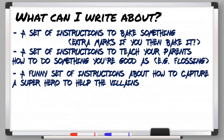Here are some writing ideas for you. First, teach someone how to make your favourite cake or biscuits — you'll get extra marks if you then actually bake it afterwards! Second, write a set of instructions to teach your parents how to do something you're good at — like how to floss, how to dab, or how to use technology. Third, write a funny set of instructions such as how to capture a superhero — how would you catch Batman, Superman, or Spider-Man? You can make it quite twisted and really funny.